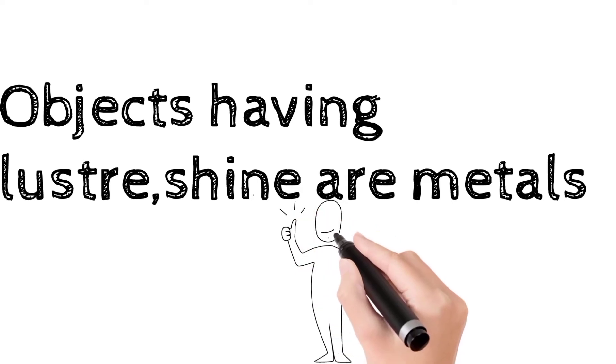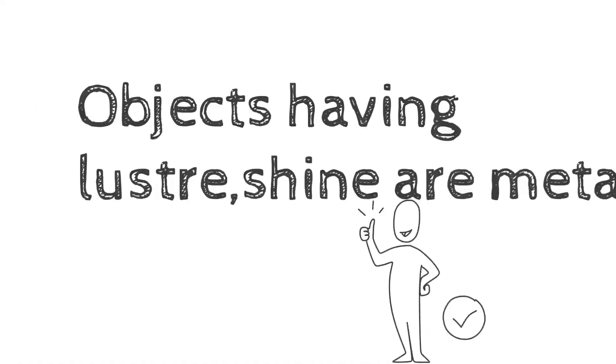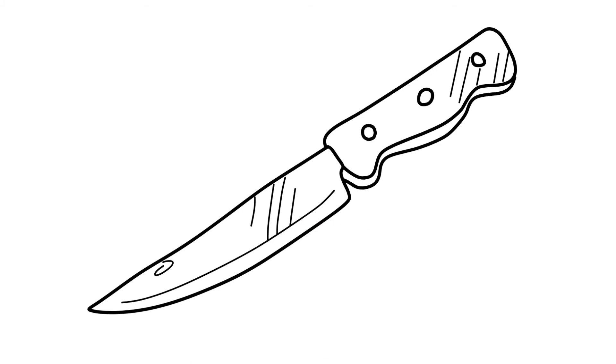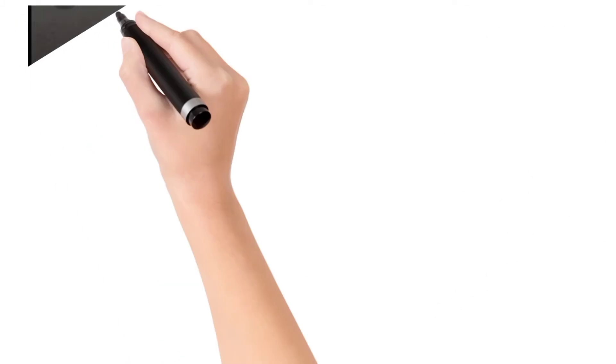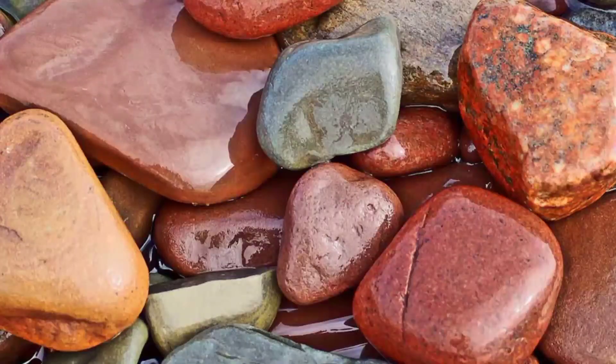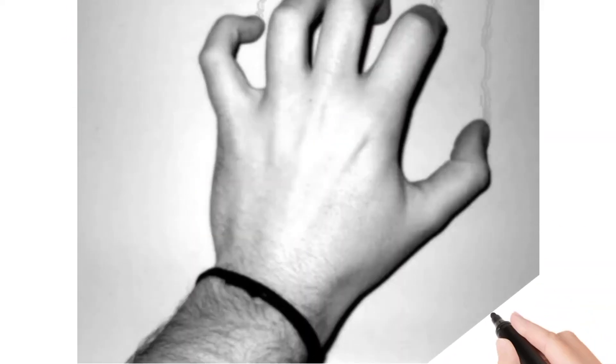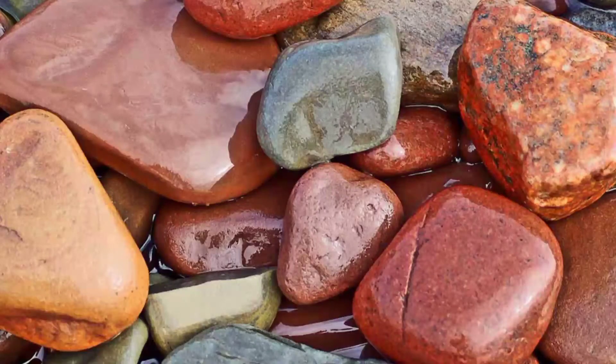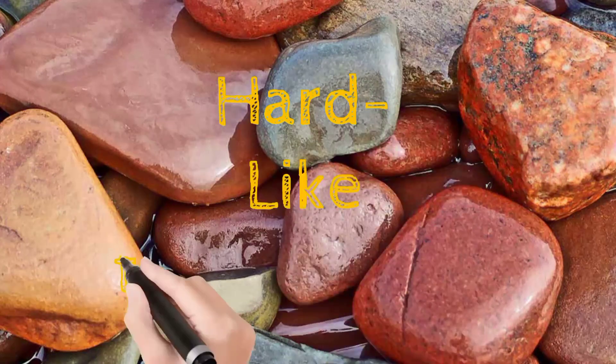Another characteristic of objects: suppose you have taken one knife and try to scratch the different objects by using this knife. Most of the time very easily you can scratch the objects. It means if we can scratch any object easily, that is soft in nature, and if it is difficult to scratch, then it is hard in nature.